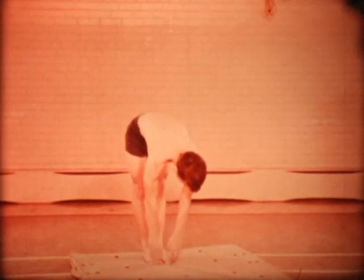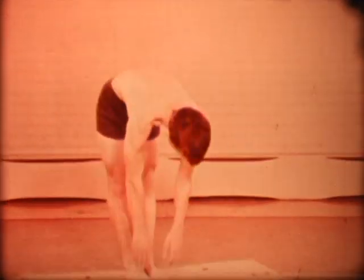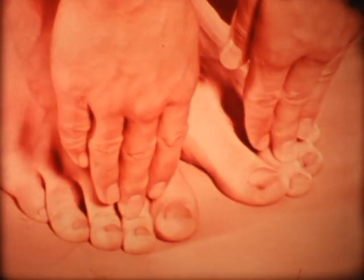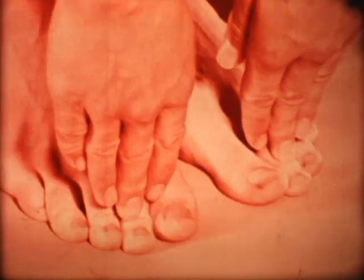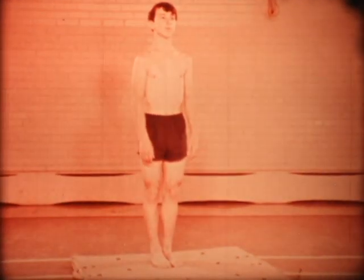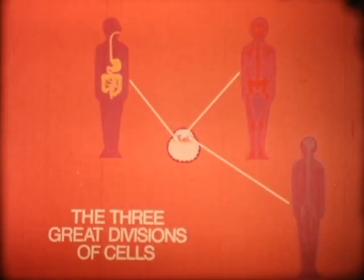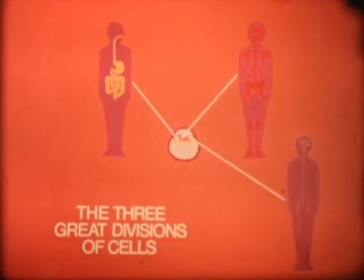The outer layer of cells also makes parts of the sense organs — the eyes, the nose, and the ears — and some parts of the body that might be called the finishing touches, such as the hair, fingernails, and toenails. The body is made up of millions of cells, all of which came from the original three layers. These are the three great divisions of cells out of which our bodies are fashioned.